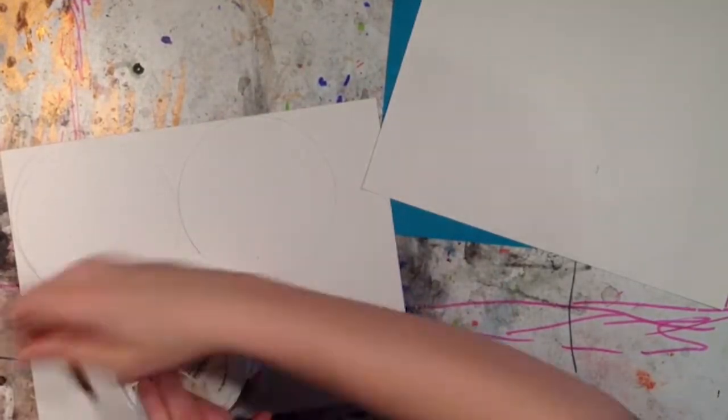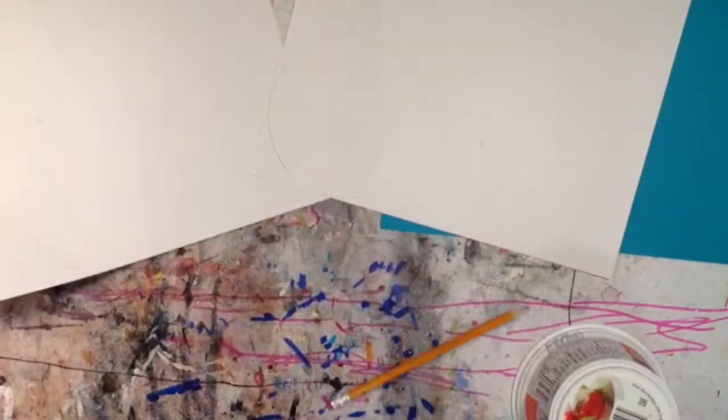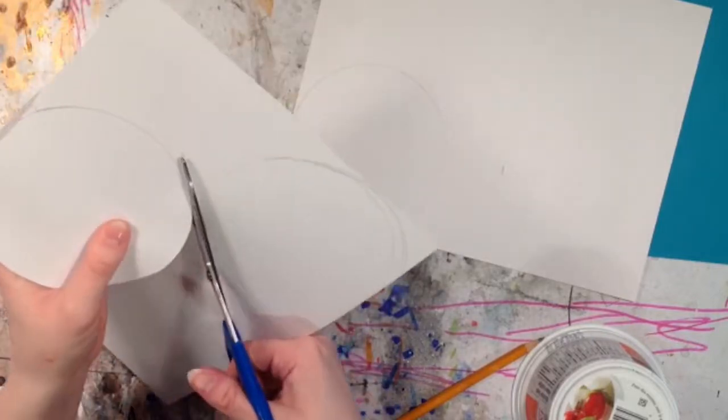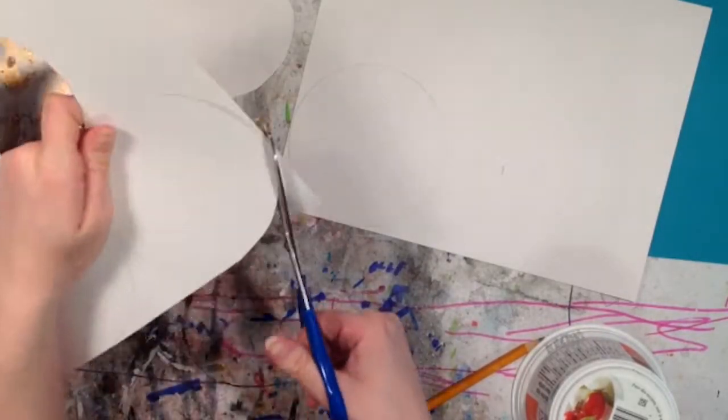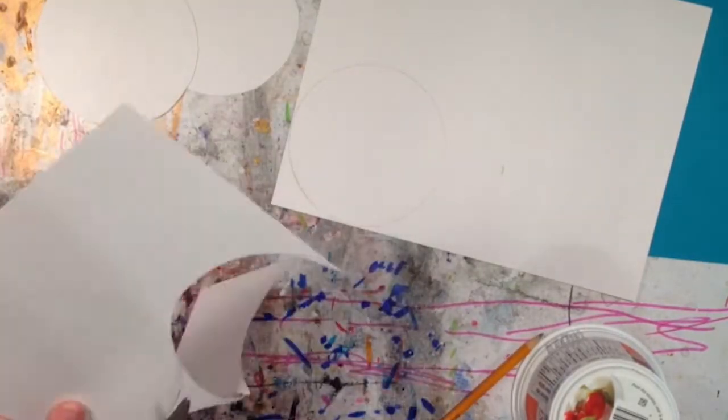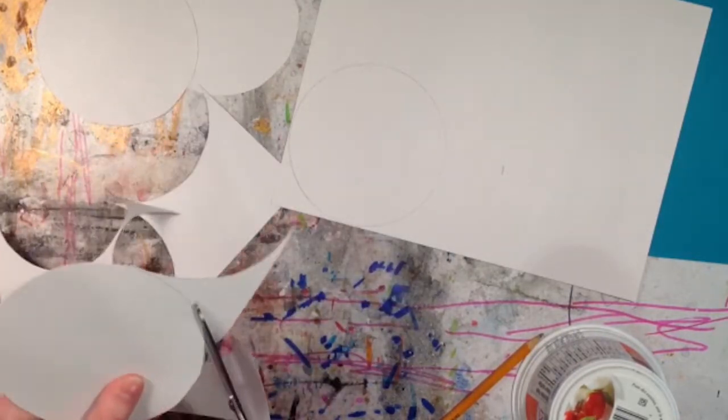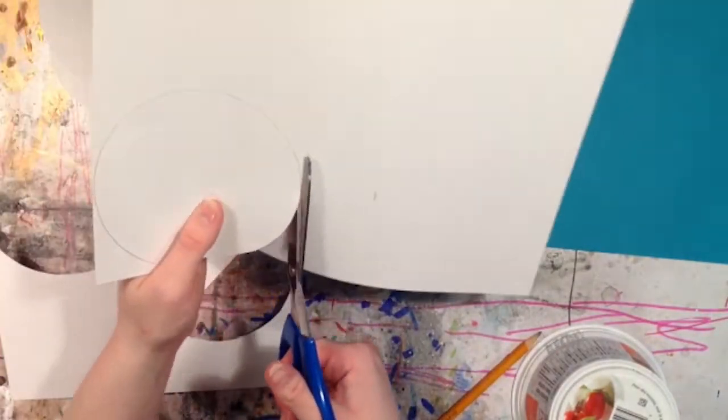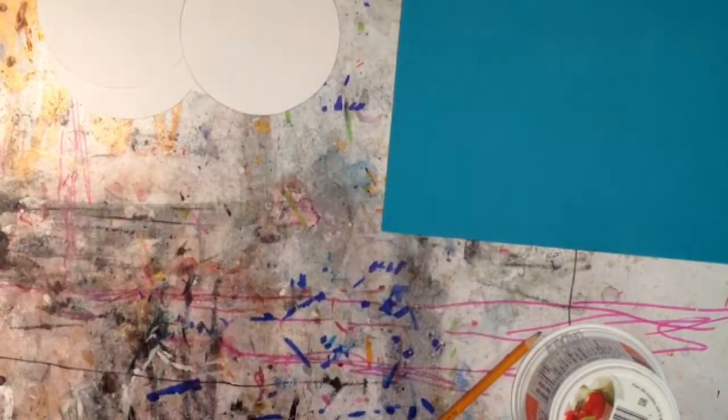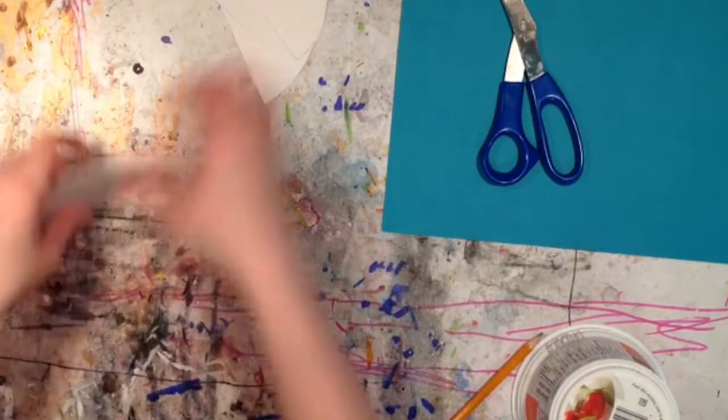Cut out all 4 circles. Cut each of them in half, and then fold each half in half again.